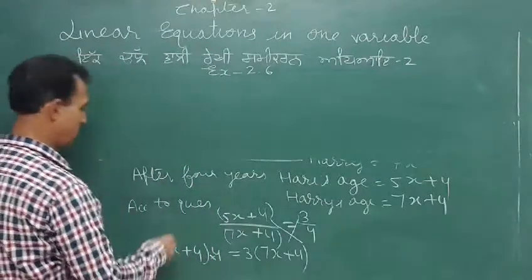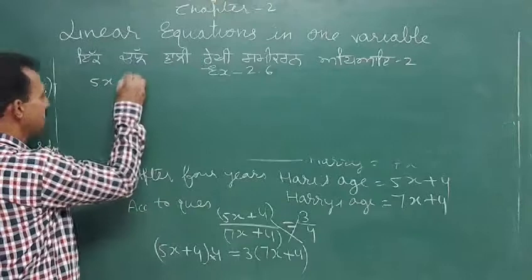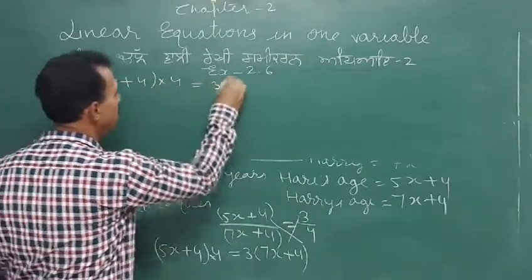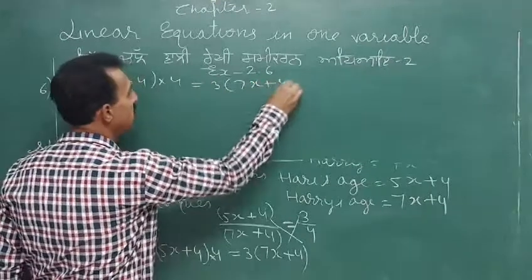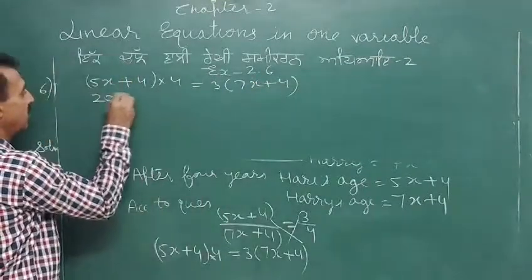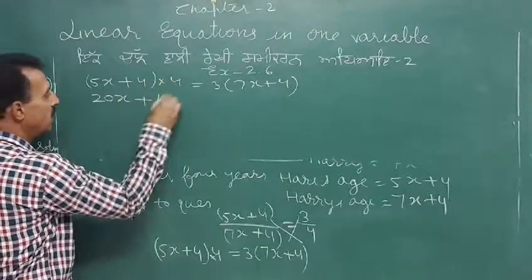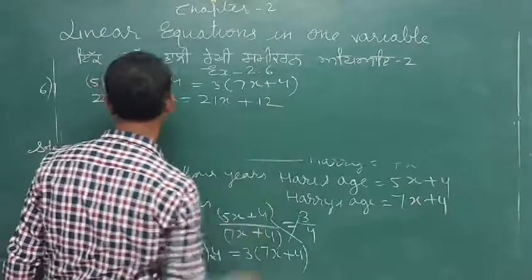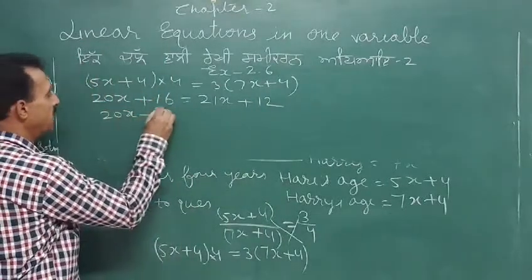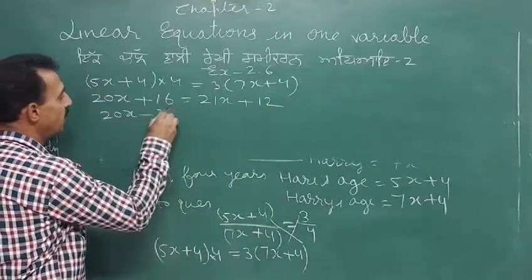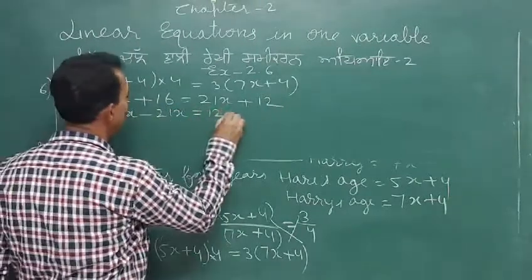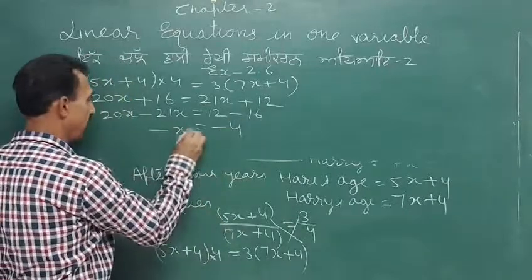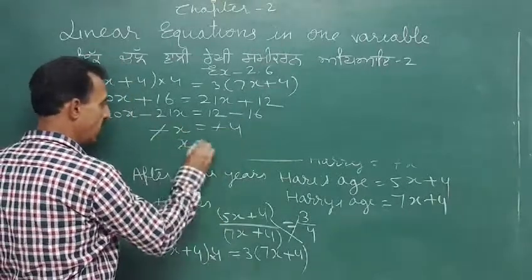5x plus 4 into 4 is equal to 3 into 7x plus 4. 4 into 5x is 20x plus 4 into 4 is 16. 3 into 7x is 21x plus 3 into 4 is 12. So 20x minus 21x is equal to 12 minus 16. So minus x is equal to minus 4. Minus minus cancels, so x is equal to 4.